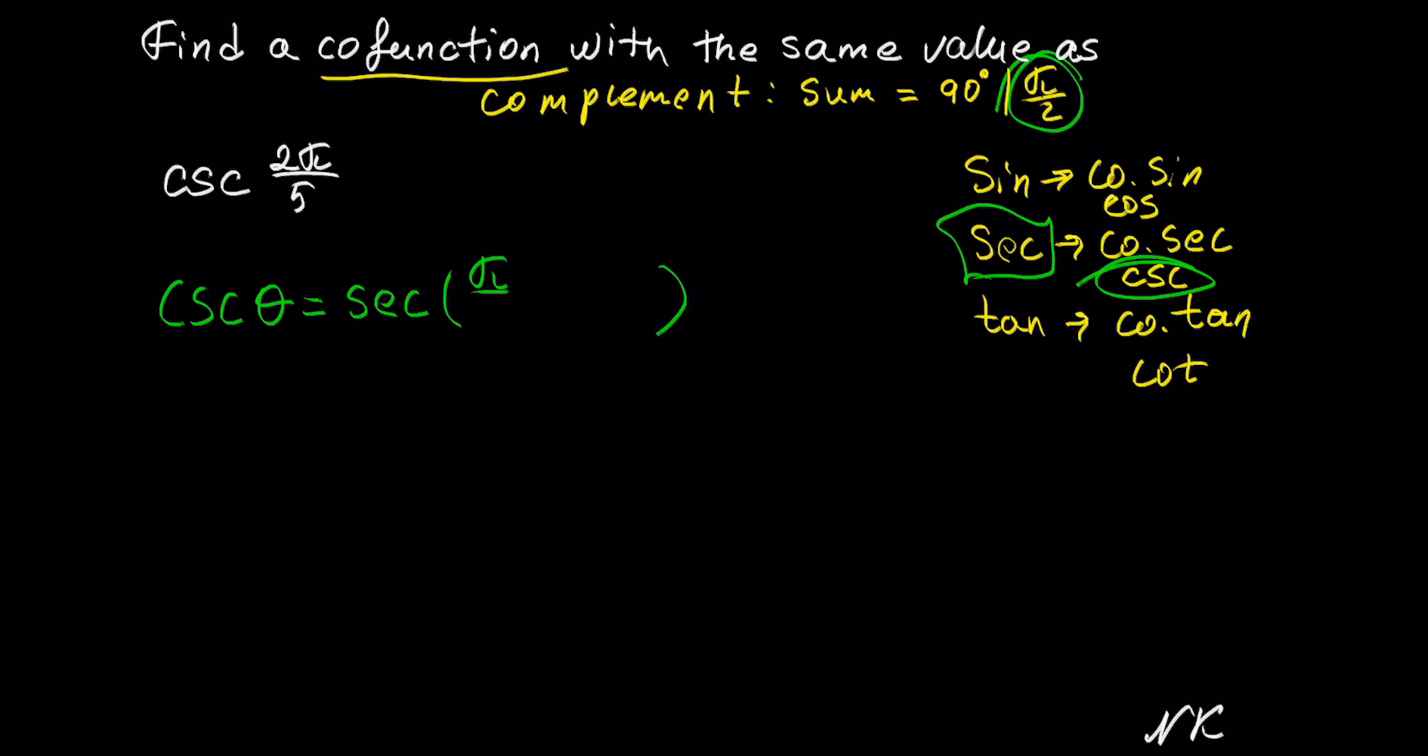So π out of 2 minus theta. Notice how if we take this angle theta and add this angle of π out of 2 minus theta, positive theta minus theta will add up to 0 and we will be left with π out of 2.